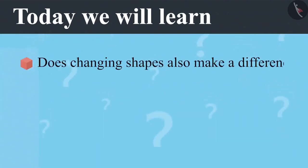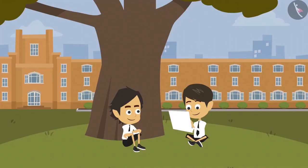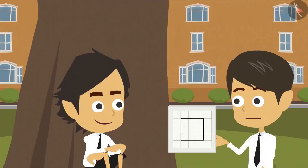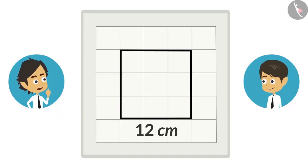Does changing shapes also make a difference in the length of their boundaries? Look, I made a square on this paper. Its boundary is 12 centimeters. Yes! That is easy to find!